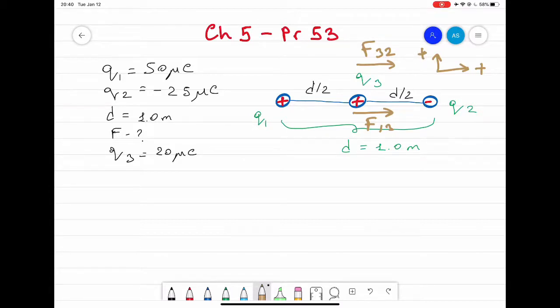So therefore, as you can see here, f1,3 and f3,2 are pointing in the same direction, therefore we can just sum those two forces. Now f net on charge q3 will be equal to f1,3 plus f3,2.